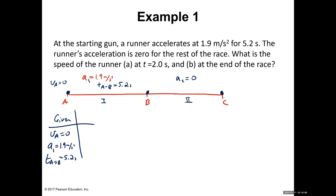We're asked to find the velocity when time equals two seconds. Is this during the first segment or the second segment? The first segment — because the acceleration lasts for 5.2 seconds and two seconds is less than 5.2 seconds. So at t equals two seconds, the runner is still somewhere between A and B, still accelerating.